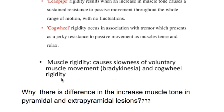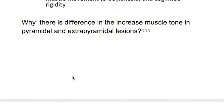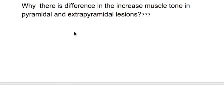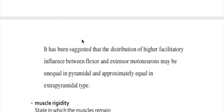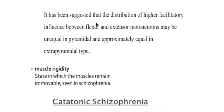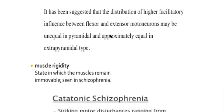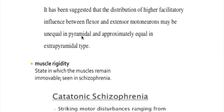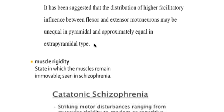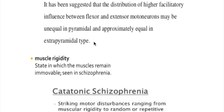Muscle rigidity that occurs in extrapyramidal disorders causes slowness of voluntary muscle movement, known as bradykinesia. The difference in increased muscle tone between pyramidal and extrapyramidal lesions is because the distribution of higher facilitatory influences between flexor and extensor motor neurons is unequal in pyramidal disorders and approximately equal in extrapyramidal disorders.